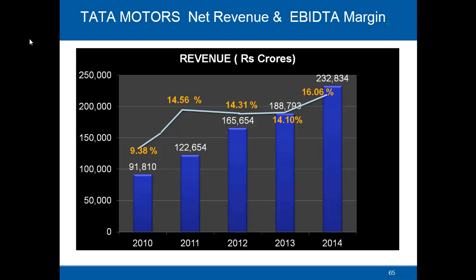The total revenue in 2010 was ₹91,810 crores and in 2014 it was ₹2,32,834 crores. This increase in revenues is on account of the merger of Tata Motors' domestic operations with Land Rover and Jaguar, where the turnover went up significantly. Land Rover and Jaguar enjoy high margins, which led to an increase in the EBITDA margin — this can be one of the reasons for improvement in the company's EBITDA margin.